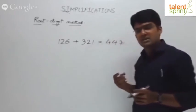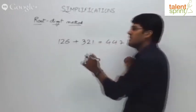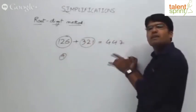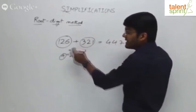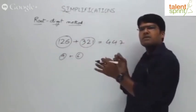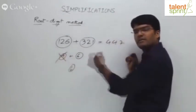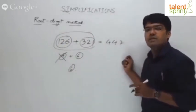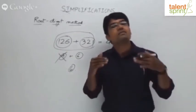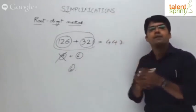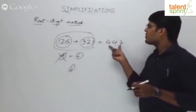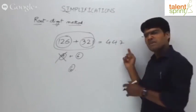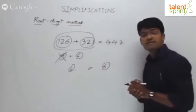As per Vedic mathematics and the digital root concept, root-digits are always balanced in any arithmetic equation. Let's check: for 447, 4 plus 4 is 8, plus 7 is 15, and 1 plus 5 is 6. Both sides give root-digit 6 — it is balanced. This is the concept. If 126 plus question mark equals 447, check which option balances the root-digit.